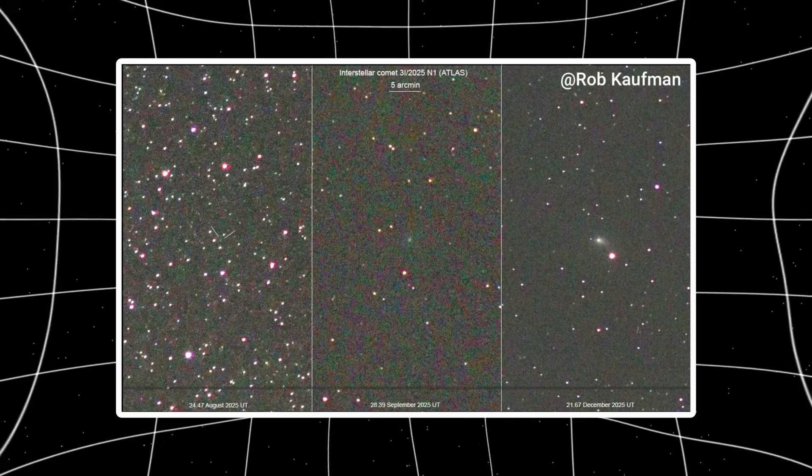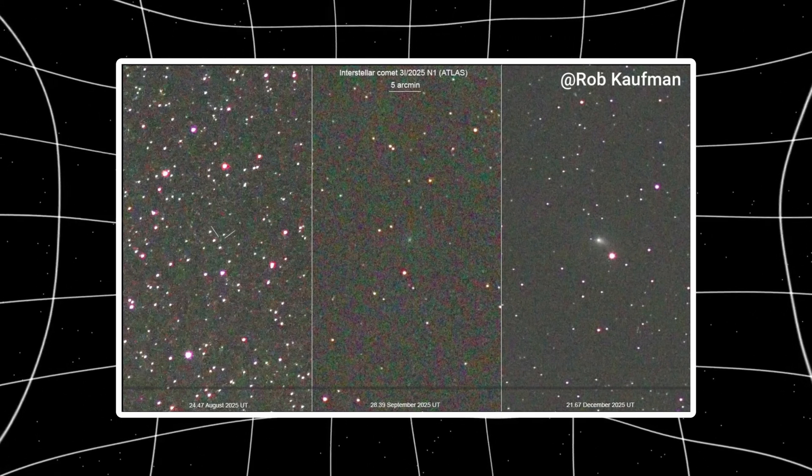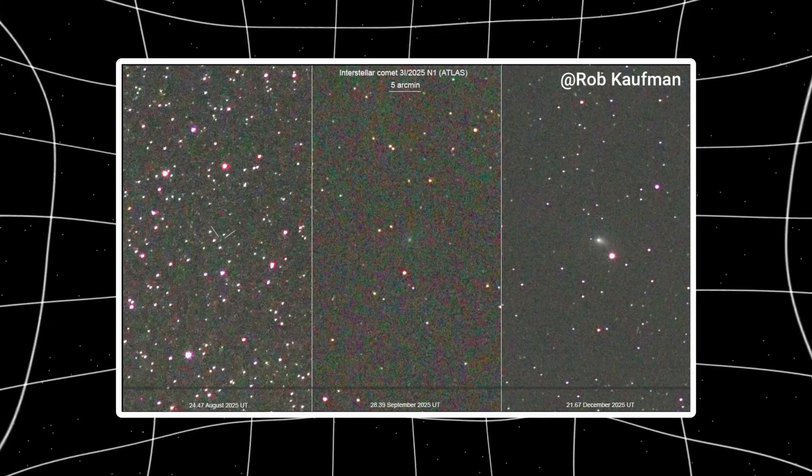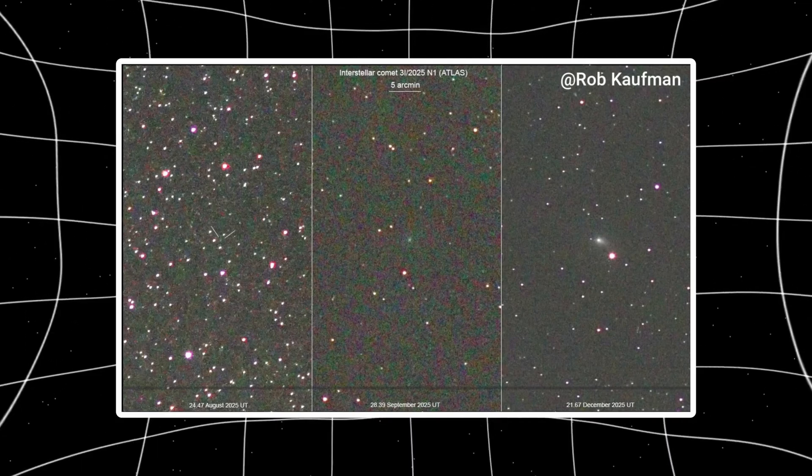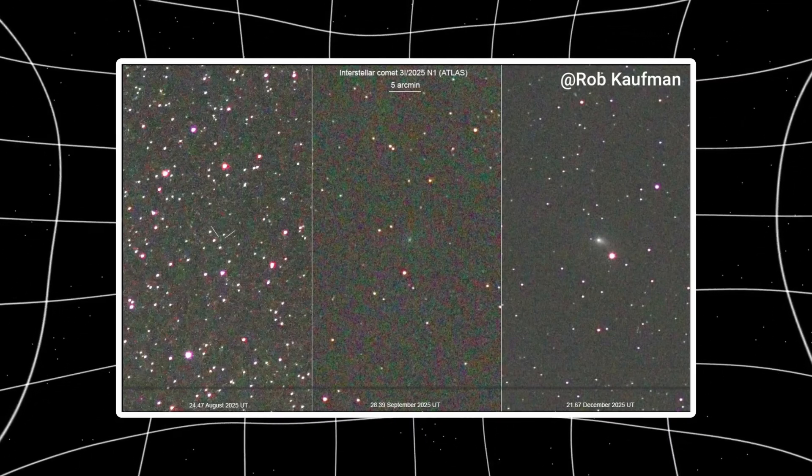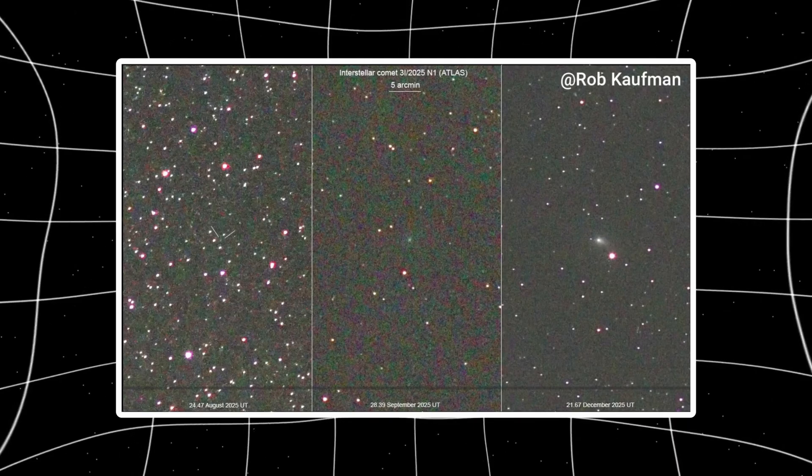From August to September, the signal strengthens. That makes sense. It's approaching the sun. More heat. More activity. More brightness. By December it fades again. Expected. Physics checks out.